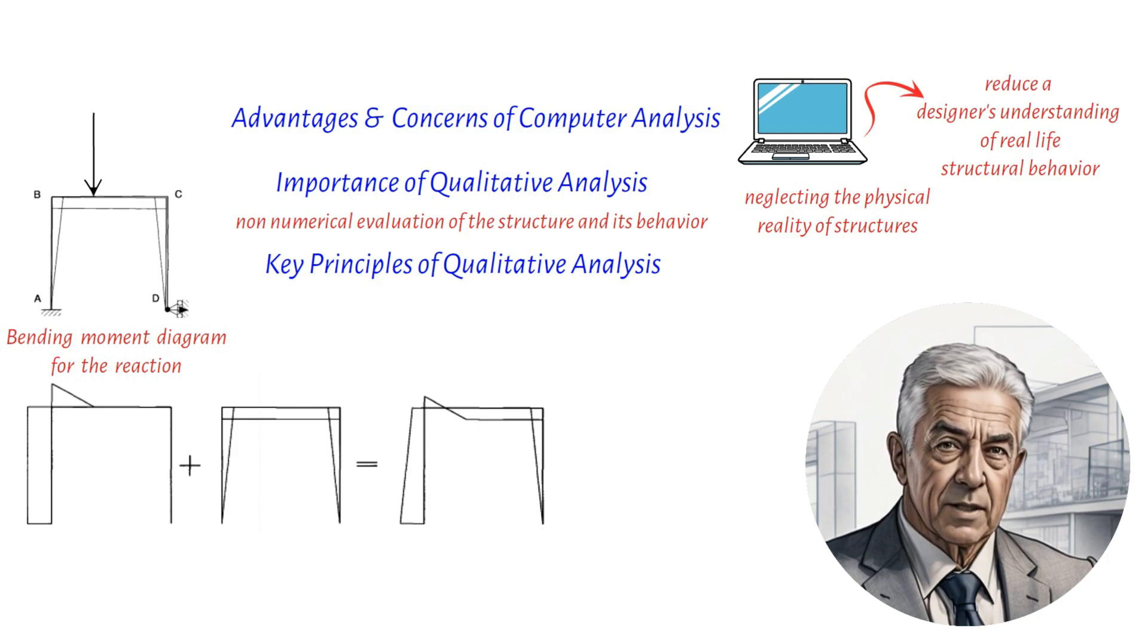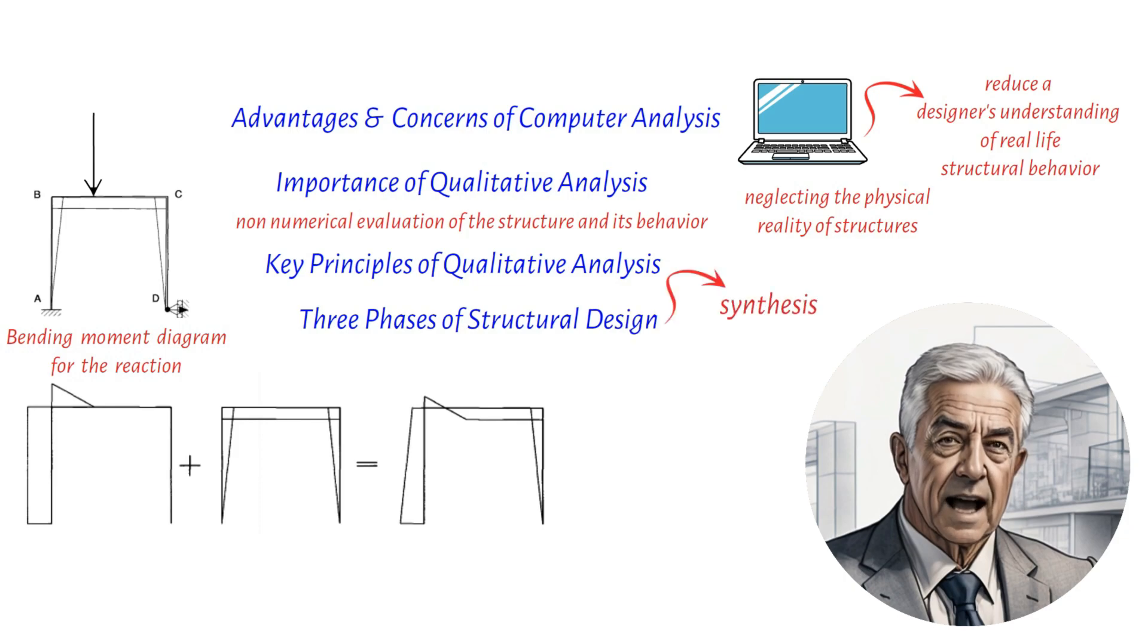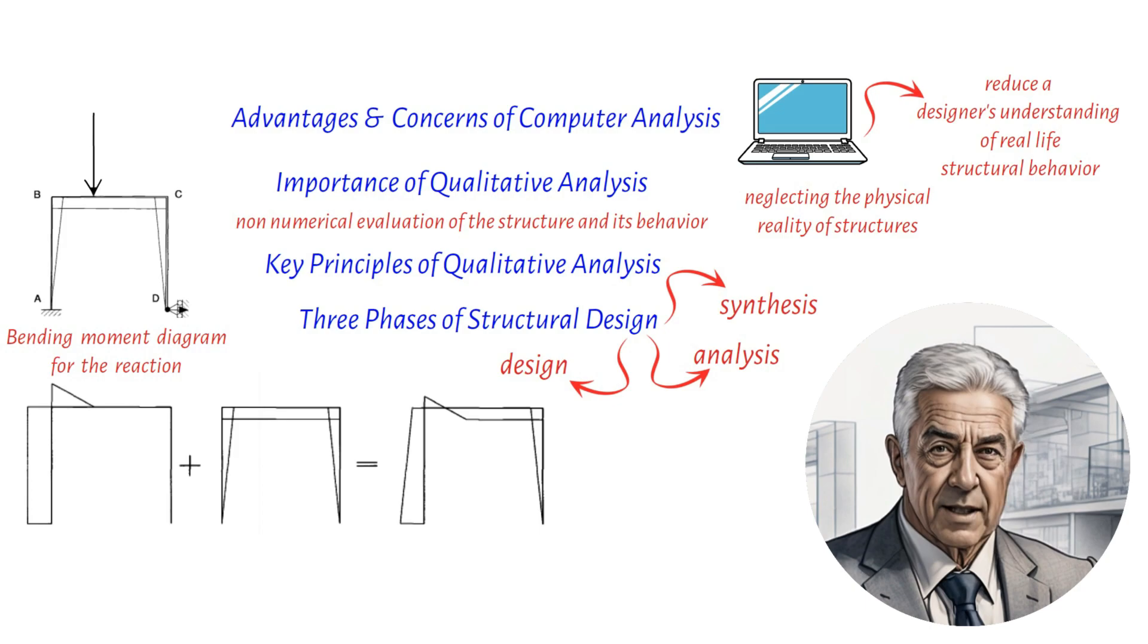The structural design process consists of three phases: synthesis, analysis and design. During the synthesis stage, the designer decides on the geometry and load resistance of the structure, which affects the form of joints and the ease of fabrication and erection.